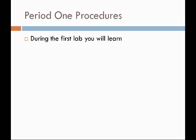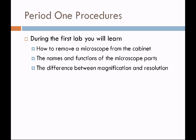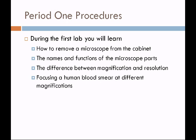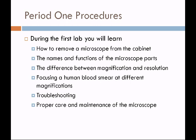In exercise one, you are going to review the use of the microscope. During the first lab, you'll learn how to remove a microscope from the cabinet, the names and functions of the microscope parts, the difference between magnification and resolution, focusing a human blood smear at different magnifications, and troubleshooting the microscope. Finally, you'll learn the proper care and maintenance of the microscope, something that is essential in the microbiology laboratory.